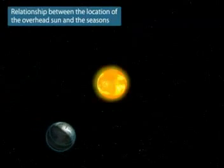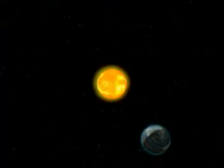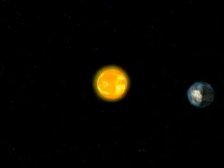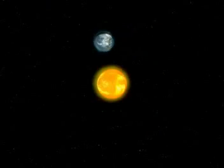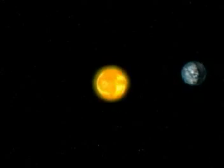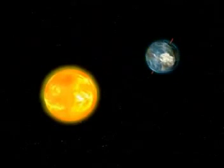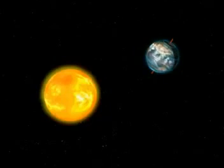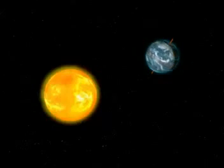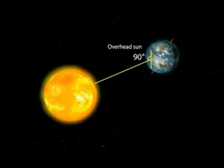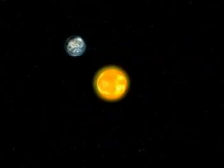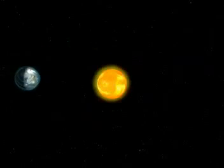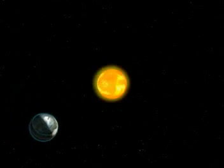The revolution of the Earth and the tilting of the axis results in a different angle of the sun during different periods. When the sun is directly overhead, we call this the overhead sun. At this time, the Earth's surface and the midday sun form a 90 degree angle. Different locations of the overhead sun result in variations in the amount of solar radiation received in different areas and at different periods.